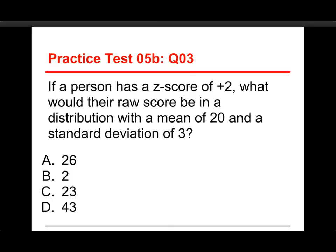Number three, if a person has a z-score of plus 2, what would their raw score be in a distribution with a mean of 20 and a standard deviation of 3? Well, the choices are 26, 2, 23, and 43. And the answer here is 26, and let me show you how we get to that.